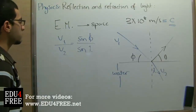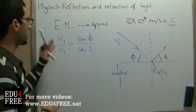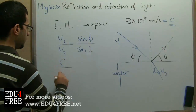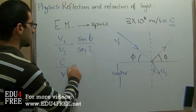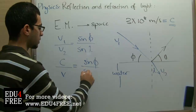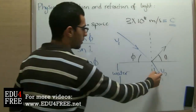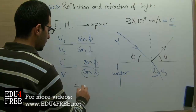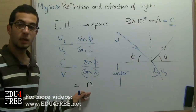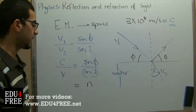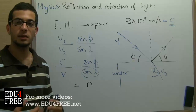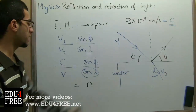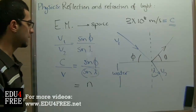So in this relation, if we are comparing the velocity of light in space to the velocity of light in any other medium, we would say C over V equals sine of the angle of incidence over sine of the angle of refraction. This ratio is called N — it is called the absolute refractive index. The absolute refractive index is the ratio between the speed of light in space, which is the constant 3×10⁸ meters per second, over the speed of light in that medium.